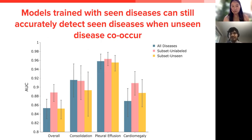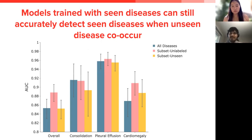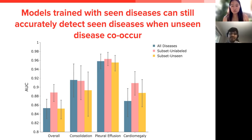The second experiment measures the performance of detecting a disease from the seen subset in the presence of unseen diseases. Our results show that the subset unlabeled and subset unseen models are able to detect seen diseases, even in the presence of unseen diseases, at a level comparable to the all-diseases model.